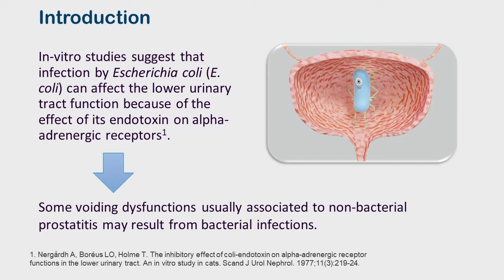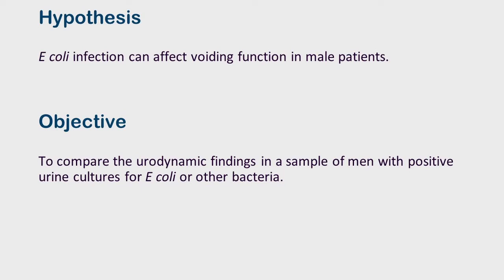In vitro studies suggest that infection by E. coli can affect lower urinary tract function because of the effect of its endotoxin on alpha adrenergic receptors. If this finding were confirmed in vivo, it would explain that some voiding dysfunctions usually associated with non-bacterial prostatitis may result from bacterial infections. Our hypothesis is that E. coli infection can affect voiding function in male patients.